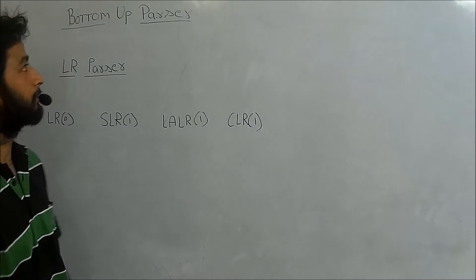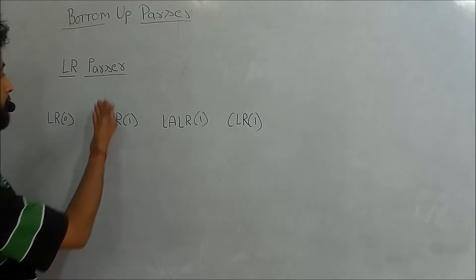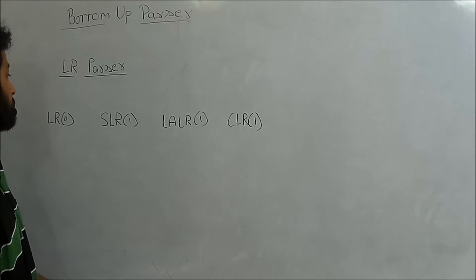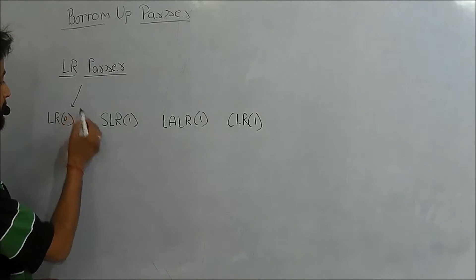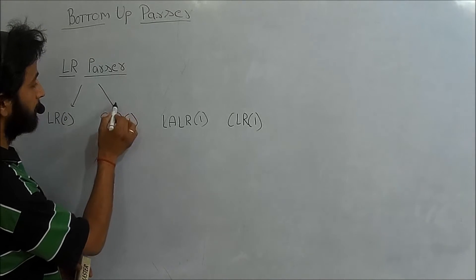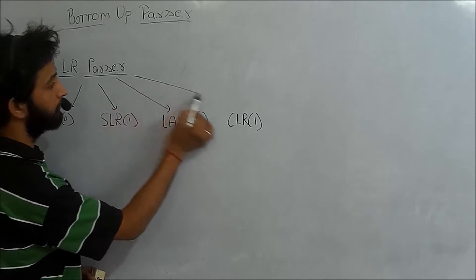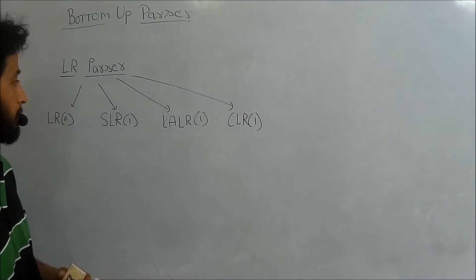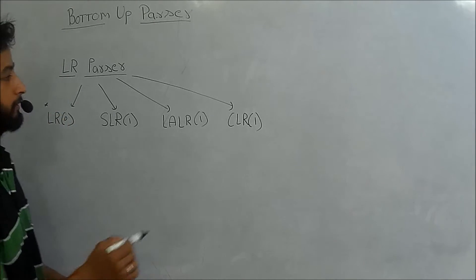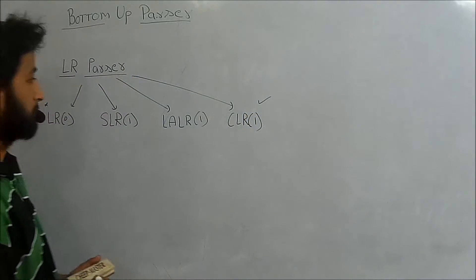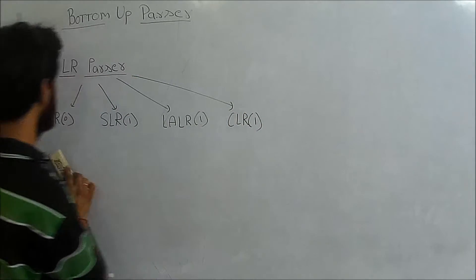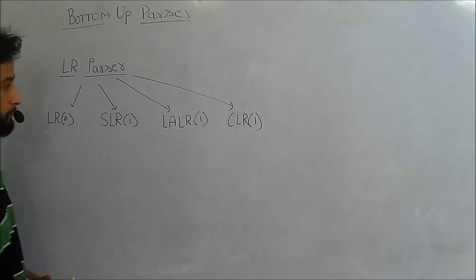The next topic under bottom-up parsers is LR parsers. LR parsers are of four types: the first one is LR0 parser, the second one is SLR1, the third type is LALR1, and the fourth one is CLR1. Among these four parsers, LR0 is the least powerful and CLR1 is the most powerful. The order of power increases from LR0 to CLR1.